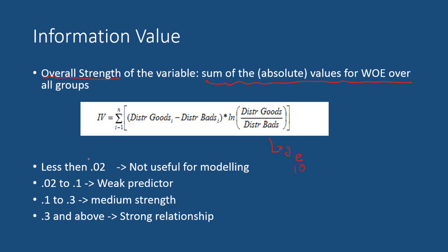If the information value is less than 0.02, the variable is not useful for modeling. If it lies between 0.02 and 0.1, it is a weak predictor. If it lies between 0.1 and 0.3, it is a predictor of medium strength. If it is 0.3 and above, the variable has a strong relationship with the dependent variable and is a good predictor.